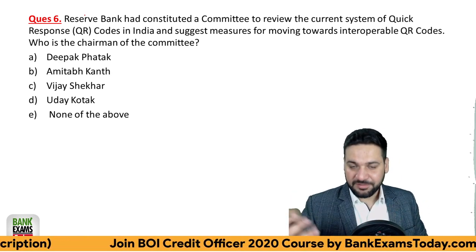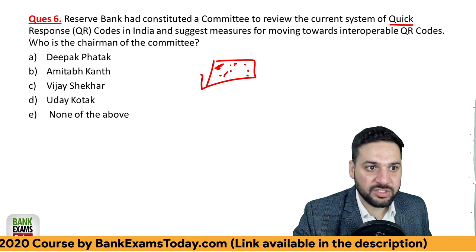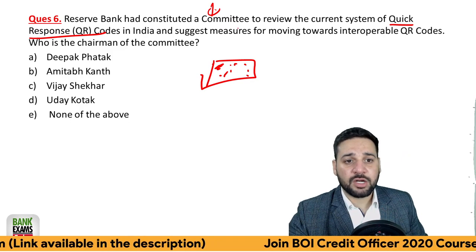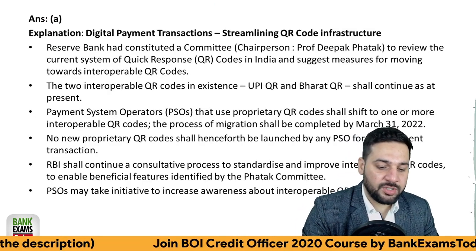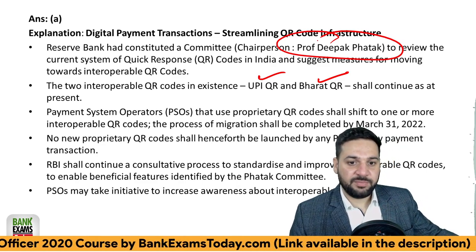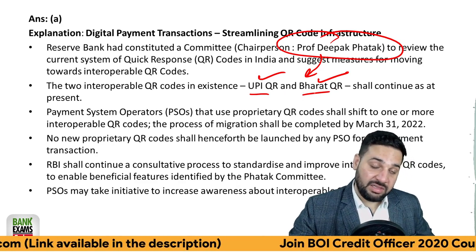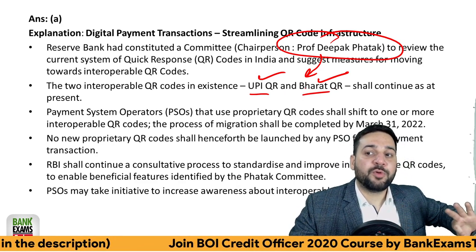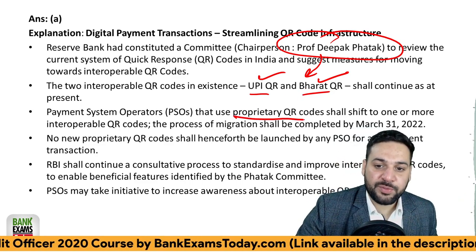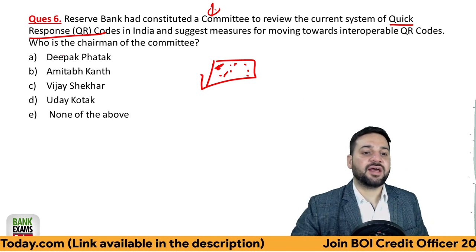Question six: the Reserve Bank of India constituted a committee to review the current QR code system. QR stands for Quick Response code. Currently there are two QR code platforms in India — UPI and Bharat QR. The Deepak Fatak committee made recommendations to RBI, which were accepted. The major recommendation was that UPI and Bharat QR should continue and proprietary QR code platforms should not be allowed. Any existing proprietary QR platform should be migrated to either UPI or Bharat QR. The answer is Deepak Fatak.